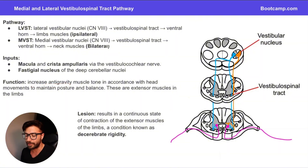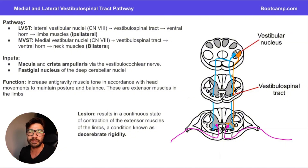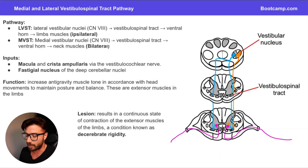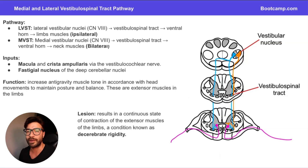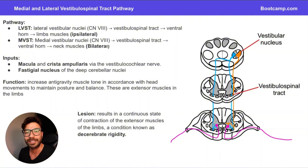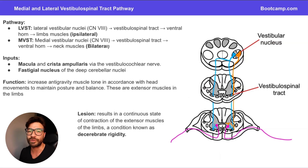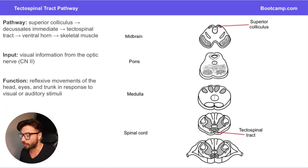The function of the vestibulospinal pathway is to increase anti-gravity muscle tone in accordance with head movements. When you turn your head, the macula and crista ampullaris pick up that signal, modulate the vestibular nucleus, and the output comes down to help modulate and refine neck and postural movements — specifically the extensor muscles in the limbs. The medial reticulospinal tract also works with the extensor muscles, so these two pathways work together. If both are damaged, you get decerebrate rigidity — a continuous state of contraction in the extensor muscles with rigidity whenever the patient tries to move.